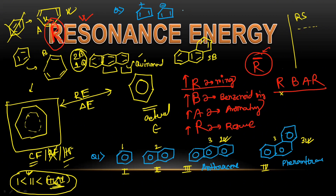Next question: compare the resonance energy of the cyclopentadienyl cation (plus), the cyclopentadienyl anion (minus), and cyclopentadiene. Approaching with R-BAR: number of rings is one in every case. Next, B — benzenoid rings: none of these are six-membered rings like benzene, they are five-membered, so benzenoid doesn't apply. Go to A — aromaticity: the first one (cation) is antiaromatic, the second (anion) is aromatic, and the third is non-aromatic. Aromaticity order for resonance energy: aromatic > non-aromatic > antiaromatic. So the order is: anion > cyclopentadiene > cation.